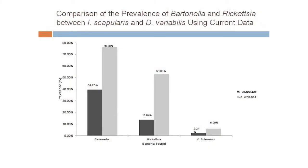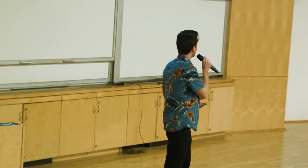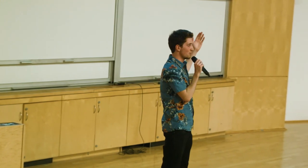The last question we wanted to address is how the prevalence of disease compares between Dermocenter and Exotus. For the three pathogens that can be transmitted by both species, we compared the prevalences found in our past data. What we saw is that Dermocenter actually had higher prevalences in all the ones we tested than Exotus scapularis — which is a little eye-opening given that Exotus is the one we're chiefly concerned with.